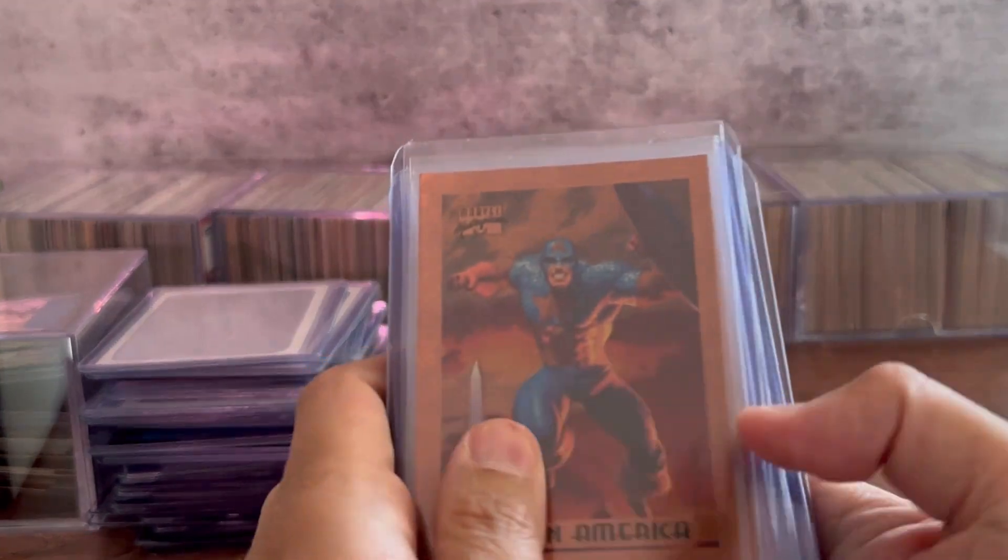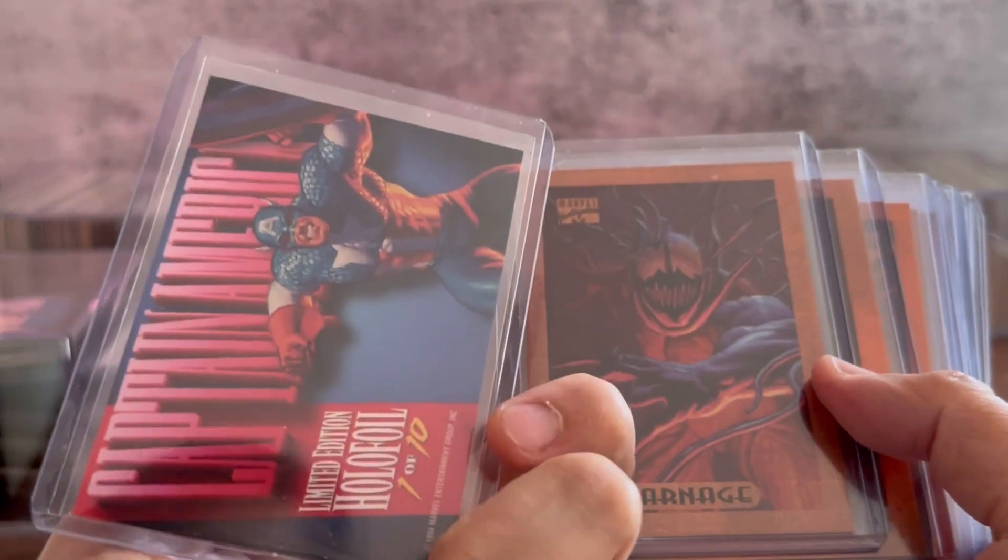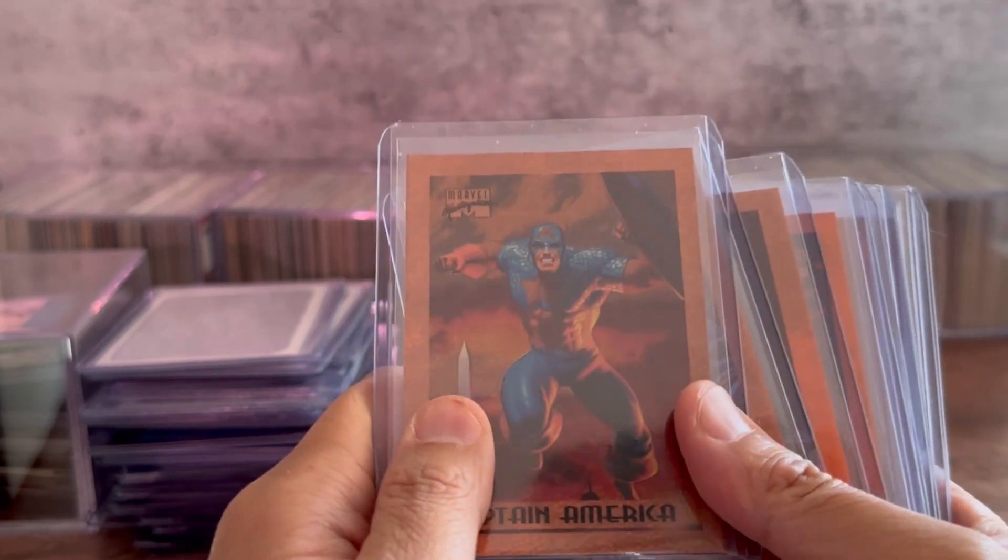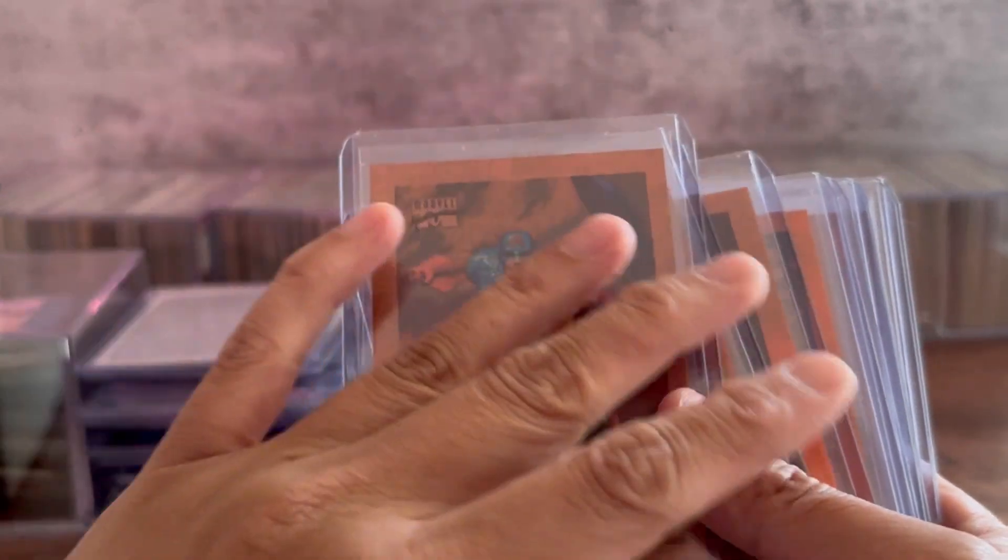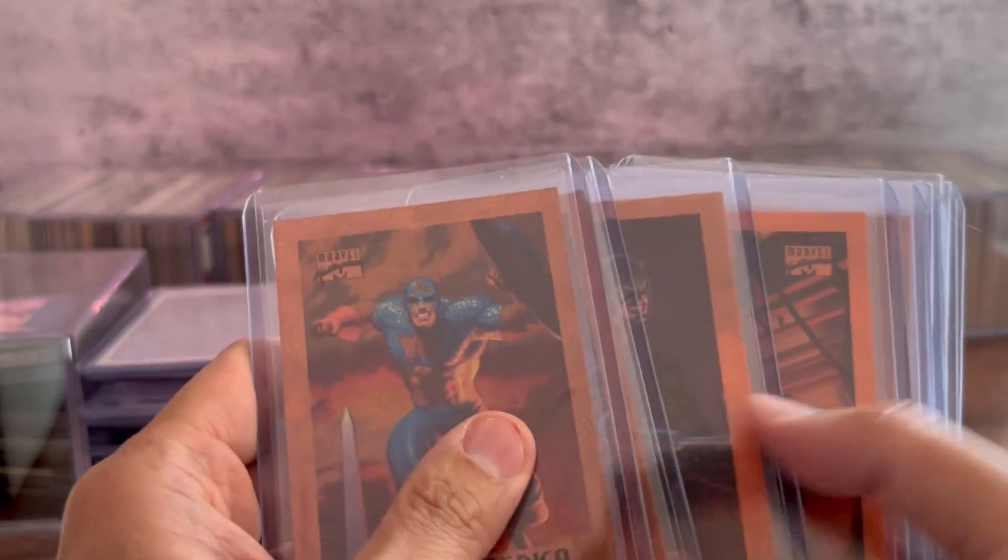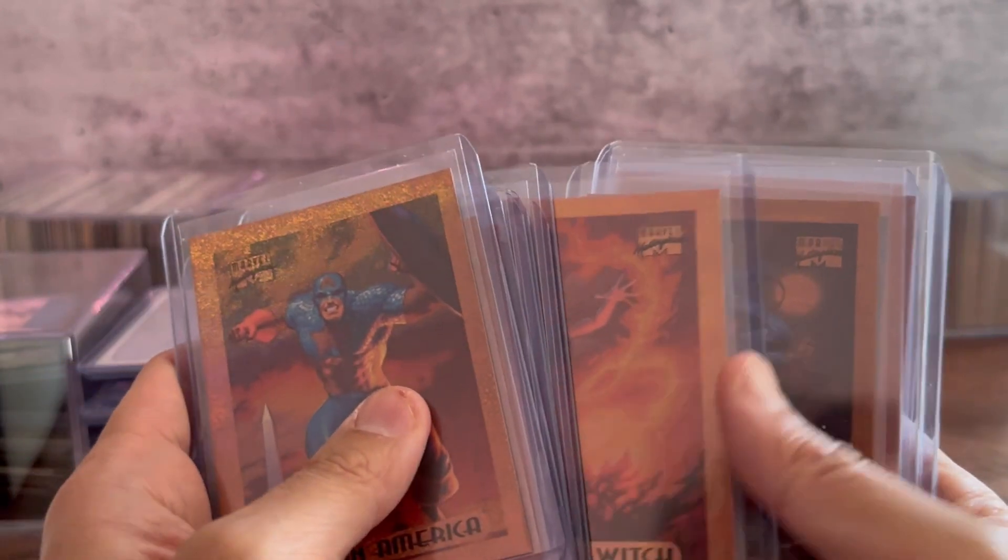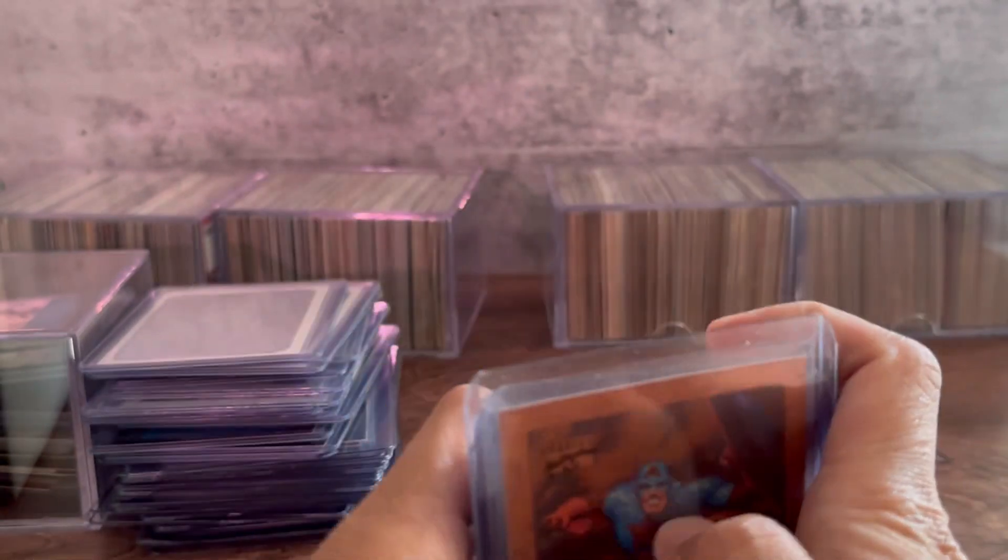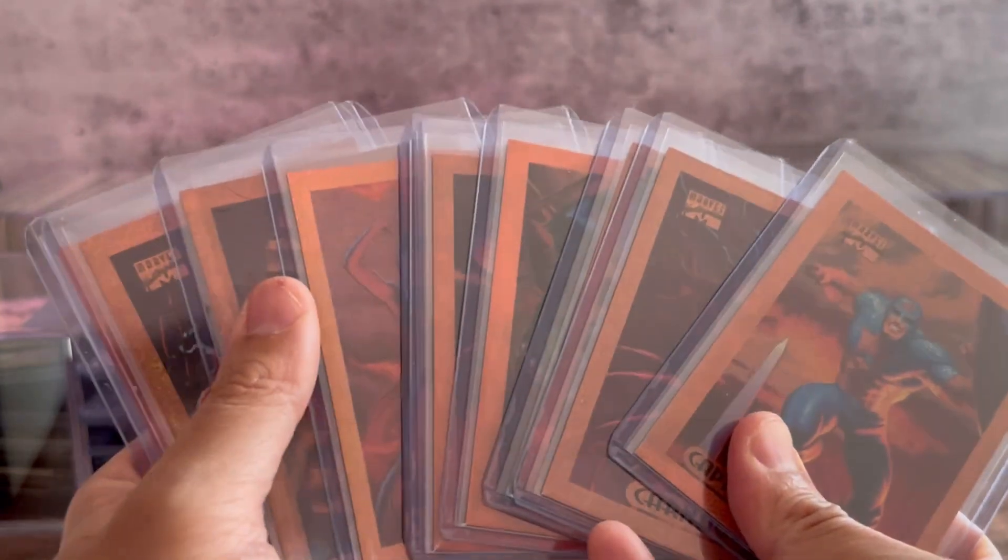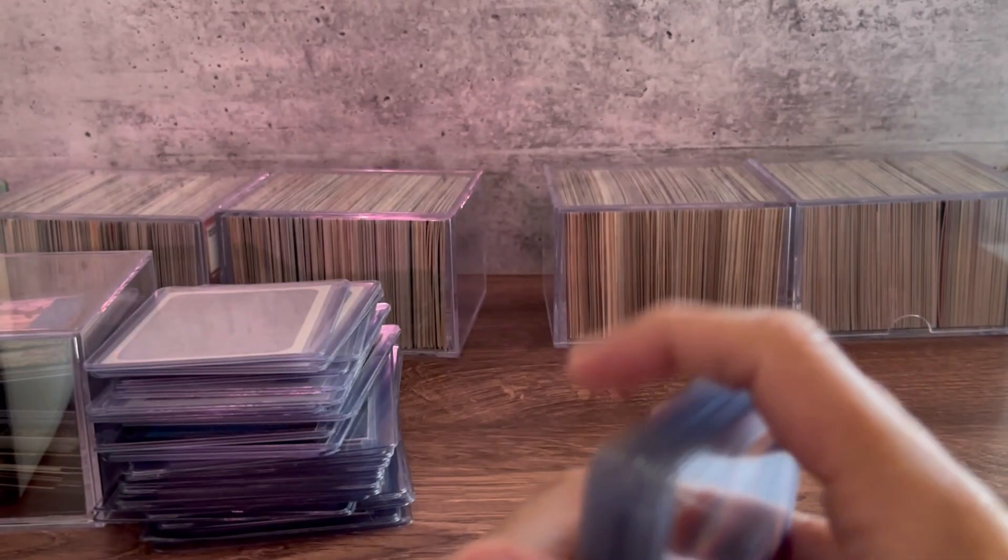This is probably the one that's worth the most. This particular set is Marvel Masterpiece, I think it's 1994 as well. They have bronze, silver, and gold foil. Surprisingly enough, the bronze foils go for more than the silver and gold, and that's because the bronze set was a Walmart exclusive.